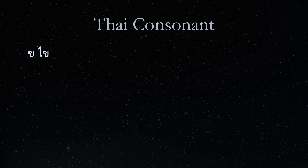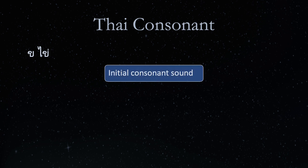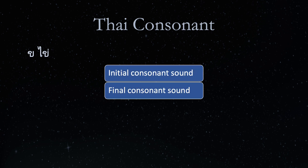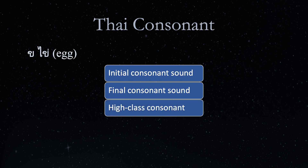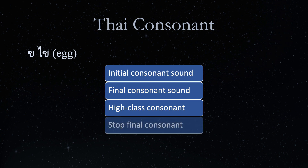The Thai consonant Kho Kai sounds like a K at the beginning and end of a syllable. The accompanying word Kai means egg. Kho Kai is a high-class consonant and a stop final consonant.